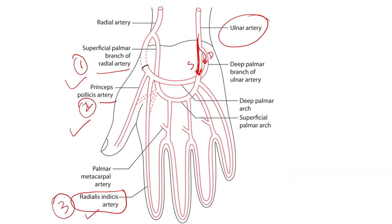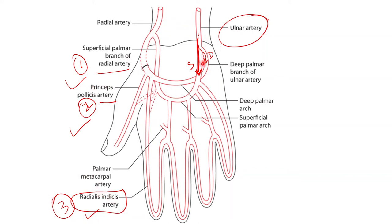This is how the arch is formed. The arch is formed on the medial side by the superficial branch of the ulnar artery, whereas on the lateral side it is completed by the superficial palmar branch of the radial artery, the principal pollicis artery, or the radialis indicis artery. This is all about the formation of the superficial palmar arch.